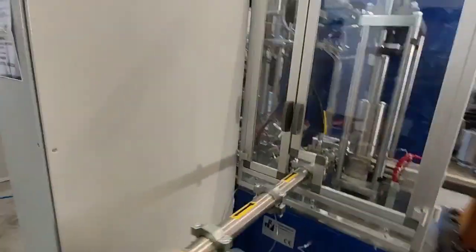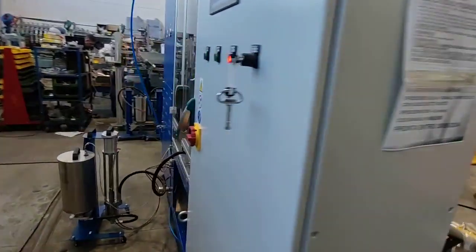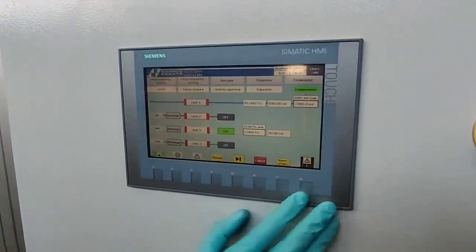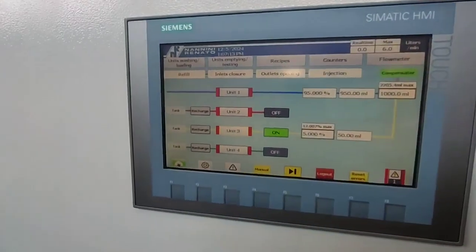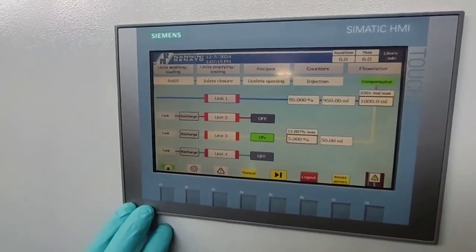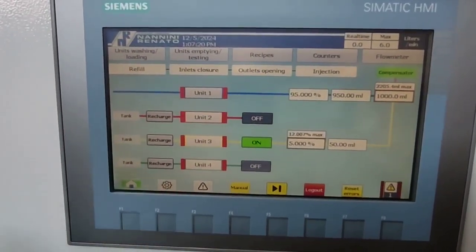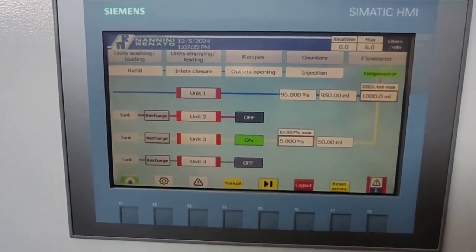Now a short explanation about the few principal functions. Here you can see the HMI of the machine, the control display. Here is shown the main page where you can see a graphic representation of the system.